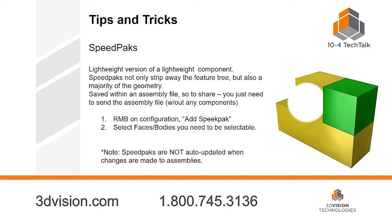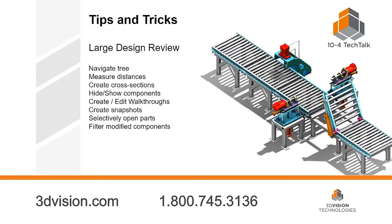Speed packs are what I call a super lightweight component. They strip away the entire feature tree and also a bunch of the geometry. You can tell when something is speed packed because as you move your mouse over it, you get ghosting around your cursor and you can see through speed-packed components. SOLIDWORKS doesn't care about all that other information except for the specific faces you tell it you need. So if a part has a certain face you're mating to something else, the rest doesn't matter — SOLIDWORKS loads just the graphics, but that mate face stays intact and selectable. Important: speed packs are not updated when you make changes to the assembly, so you'd have to make it lightweight or turn off the speed pack to get changes to occur.